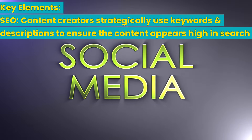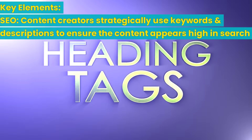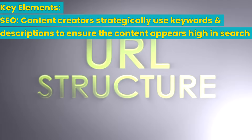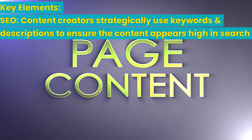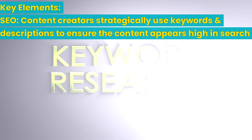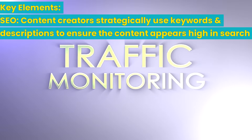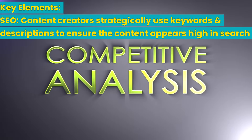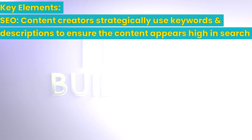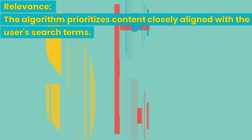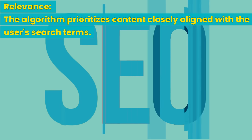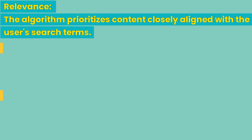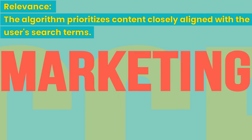Key elements of pull algorithms: SEO — search engine optimization. Content creators need to strategically use keywords, descriptions, and other metadata to ensure their content appears high in search results. Relevance: the algorithm prioritizes content closely aligned with the user's search terms.